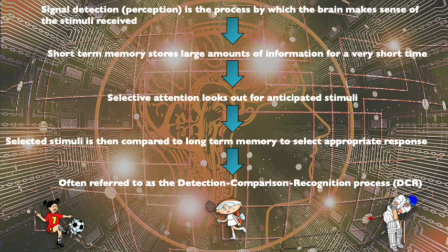Selected stimuli are compared to long-term memory to select appropriate responses. A performer is much more nervous on their first appearance in front of a large crowd than on their hundredth, because over time they've used long-term memory to zone out irrelevant distractions and focus on their sport. This can be referred to as the Detection-Comparison-Recognition (DCR) process: we detect things, compare to previous exposure to these stimuli, and recognise what's important for our skill — that's how DCR affects performance.